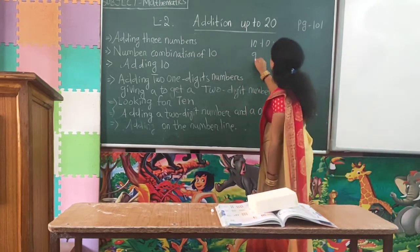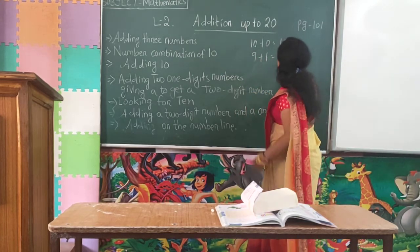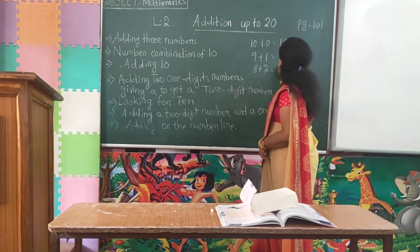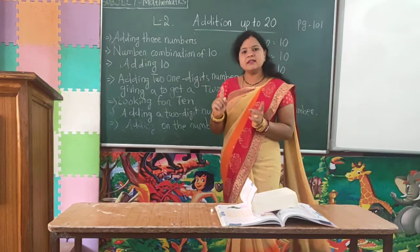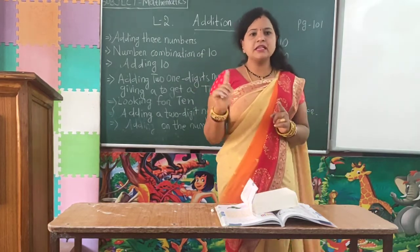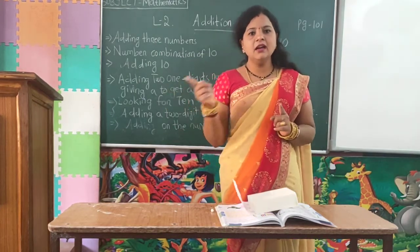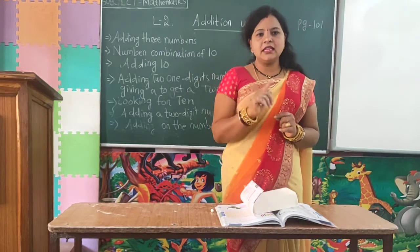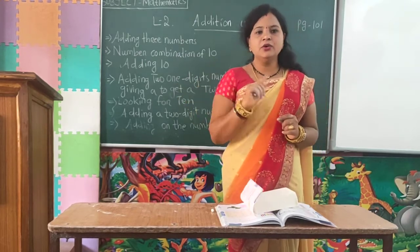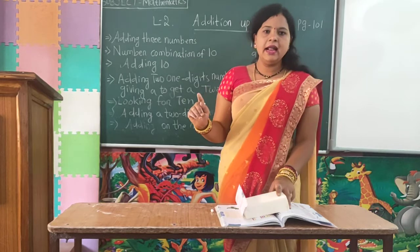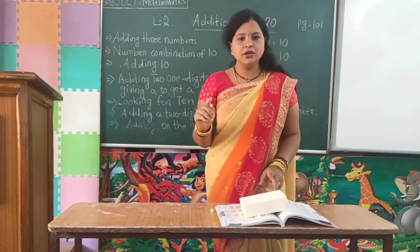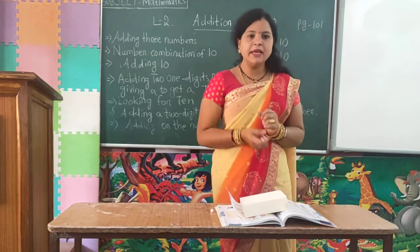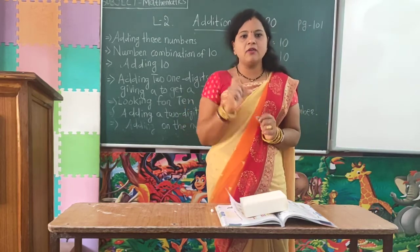9 plus 1 is equal to 10. 8 plus 2 is equal to 10. 7 plus 3 is 10. 6 plus 4 is 10. 5 plus 5 is 10. 4 plus 6 is 10. 3 plus 7 is 10. 2 plus 8 is 10. 0 plus 10 is equal to 10. And 1 plus 9 is also equal to 10. These are the number combinations of 10.